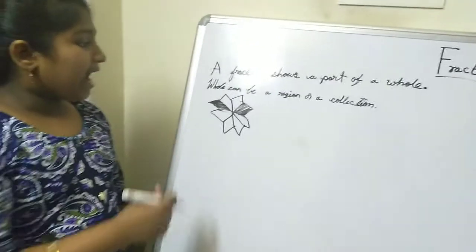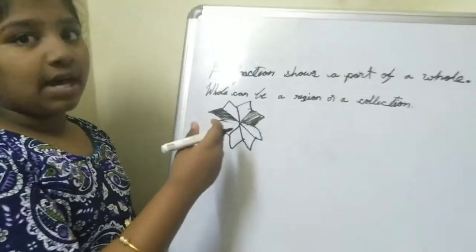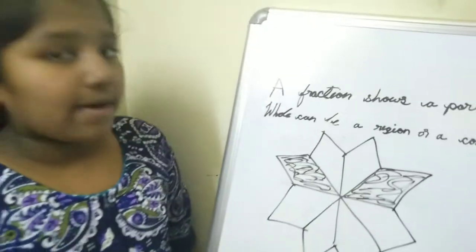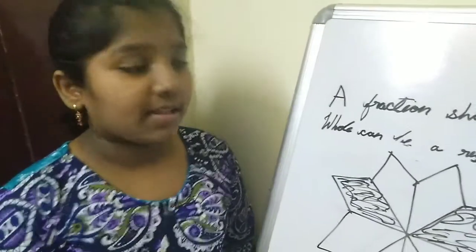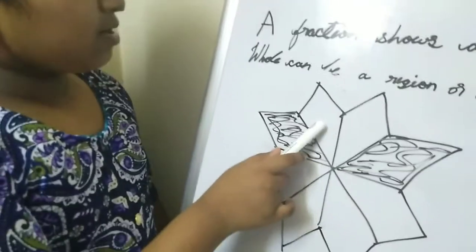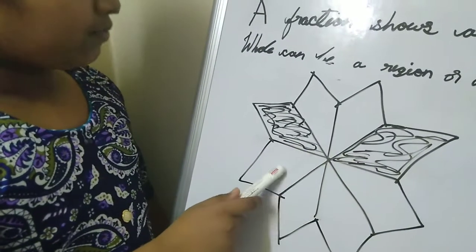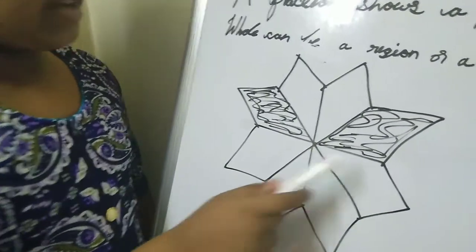There are 8 parts in this particular flower. The flower is divided into 8 parts. Let me count: 1, 2, 3, 4, 5, 6, 7, 8. So 8 comes in the denominator.